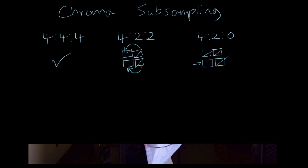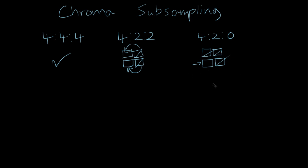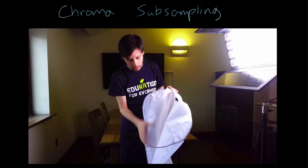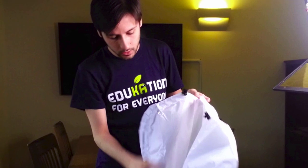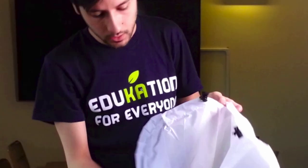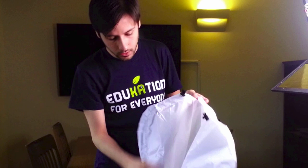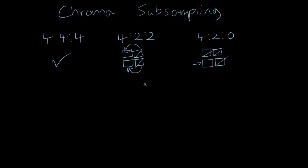The downside of chroma subsampling is mainly with chroma keying — that's green screen — or heavy effects work. If you're doing a green screen, the chroma key works by separating out colors. You'll end up grabbing edge areas that should be purple but are technically green due to chroma subsampling. So your key will pull into edges it shouldn't. If you're doing green screening or effects work, it's always better to use less or no chroma subsampling — meaning 4:4:4 or at least 4:2:2.